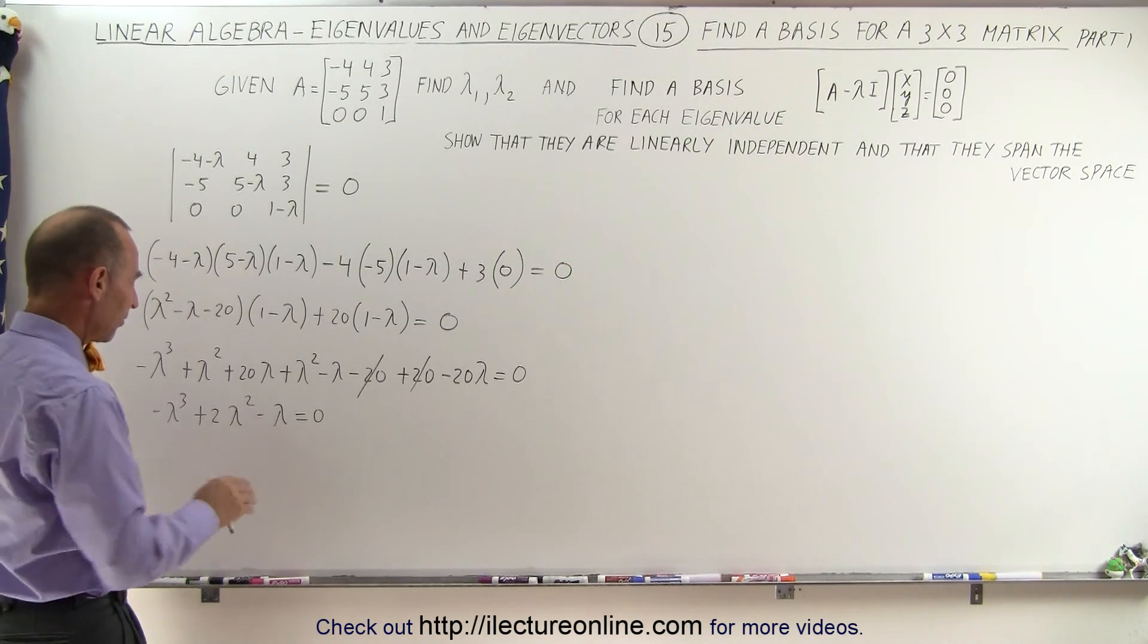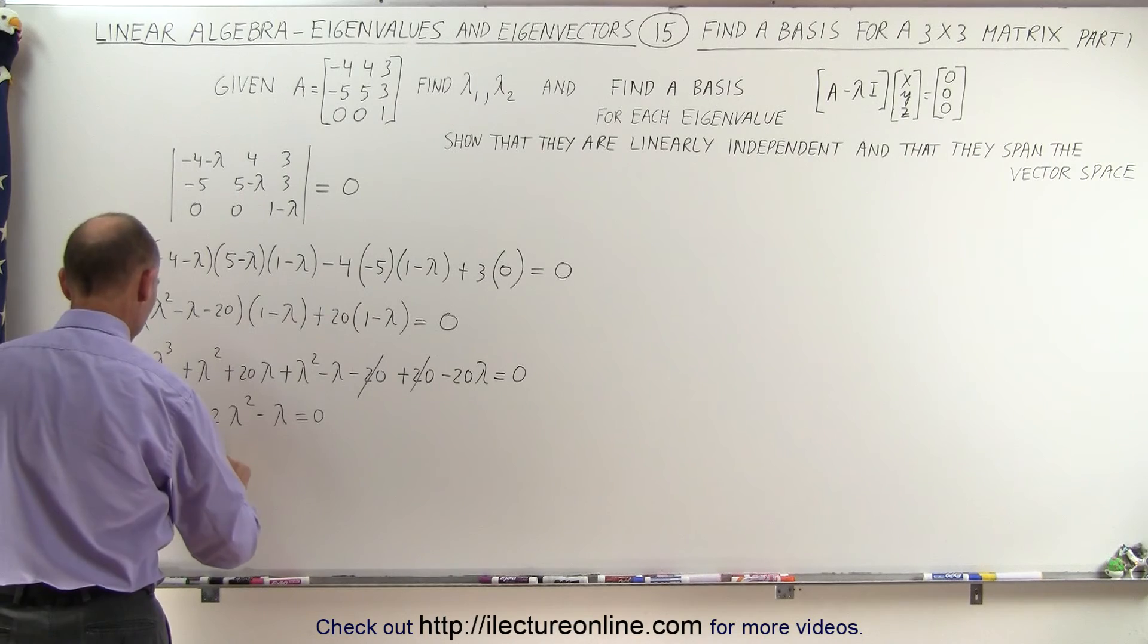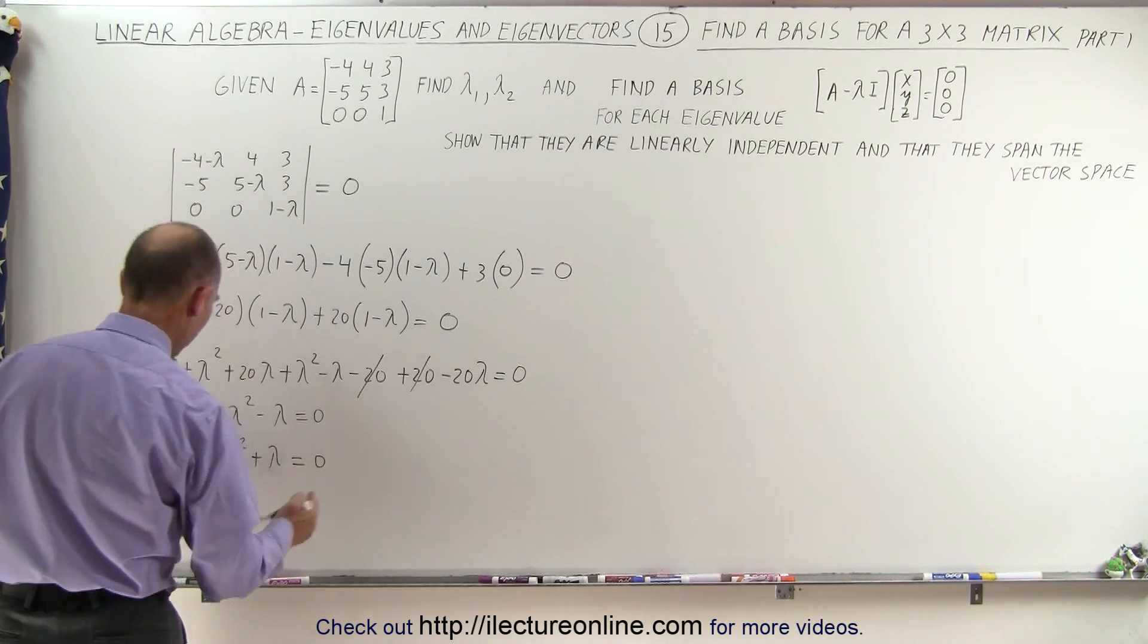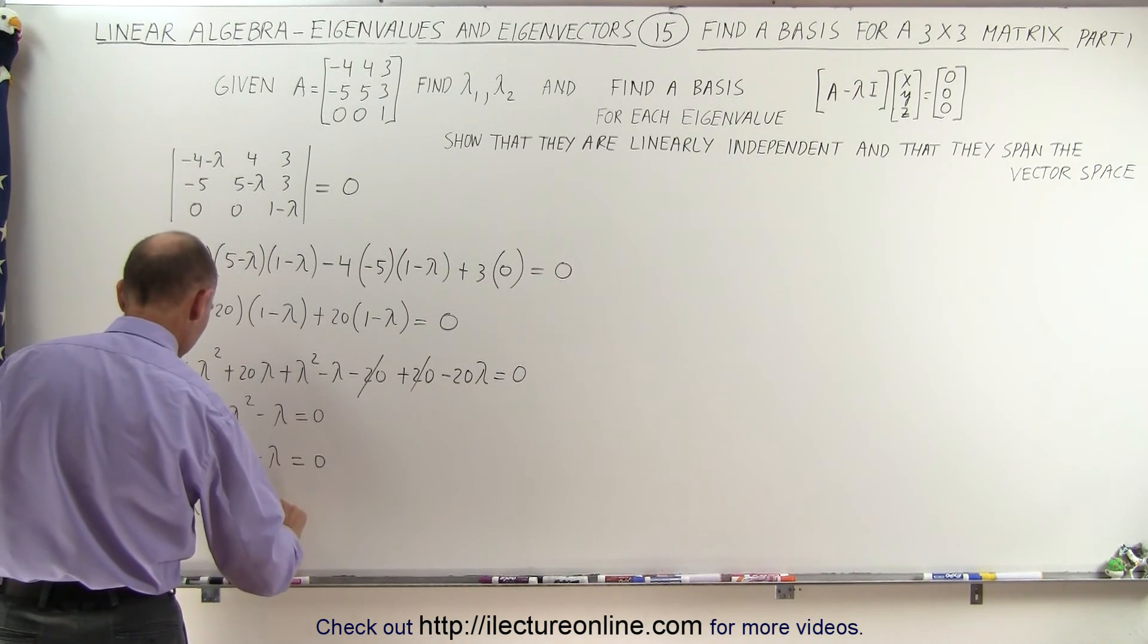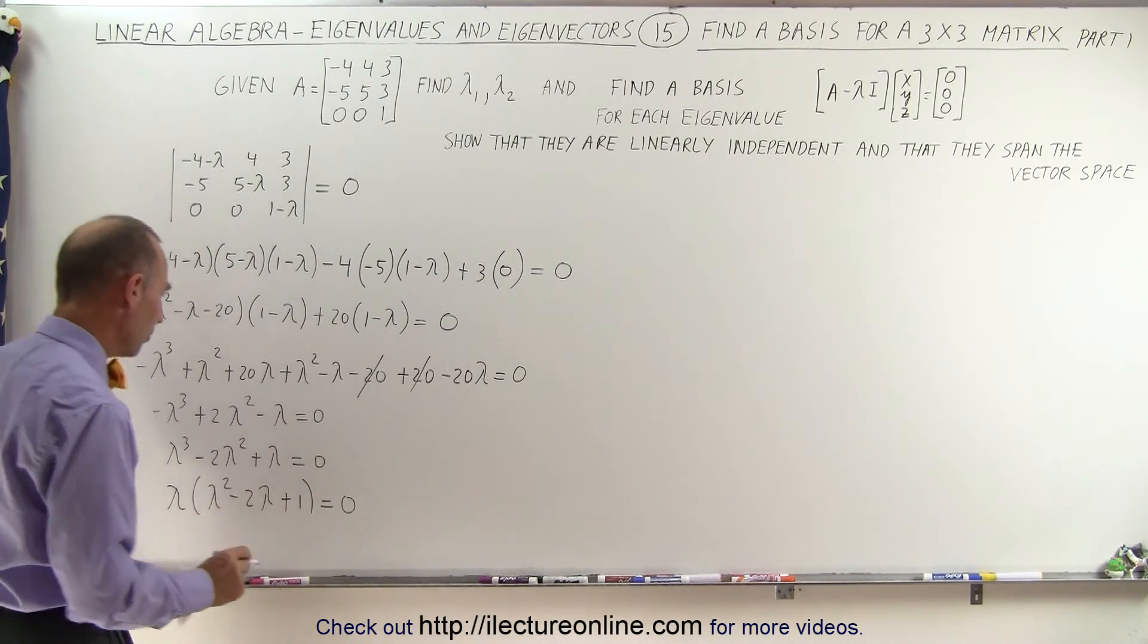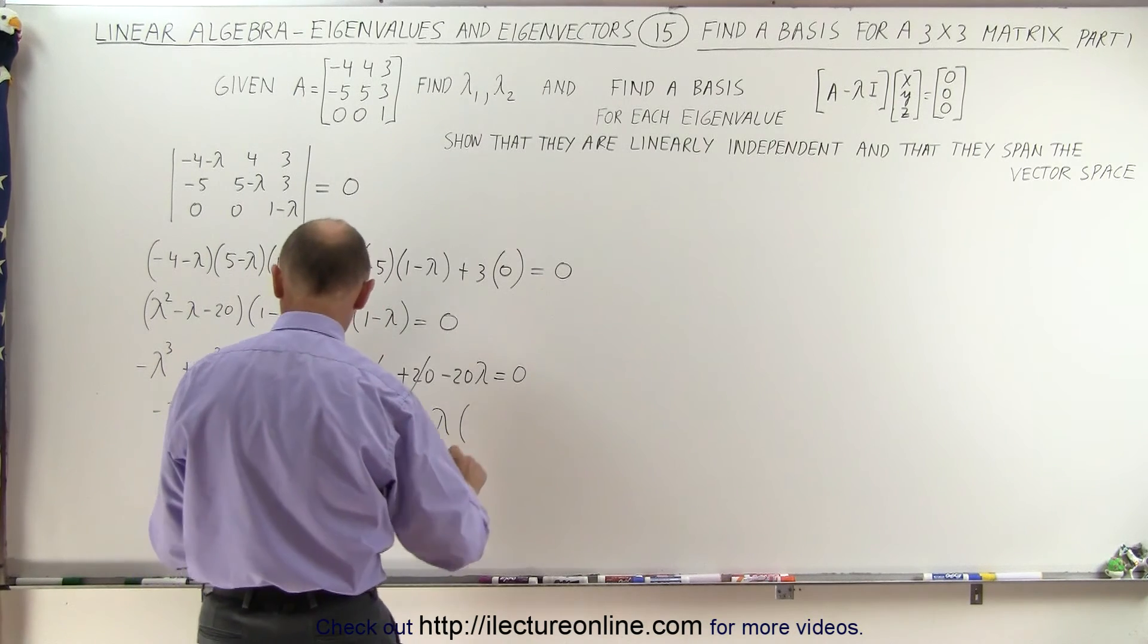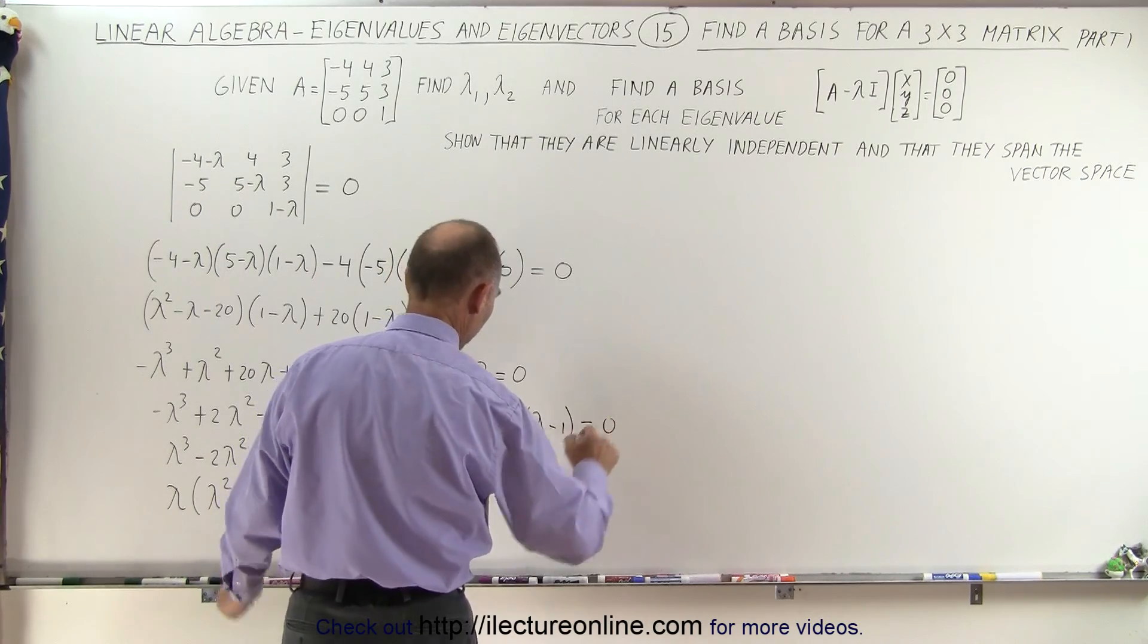I like the first term to be positive. I'm going to multiply everything by negative 1. So we get lambda cubed minus 2 lambda squared plus lambda equals 0. And when I factor out a lambda I'll get lambda squared minus 2 lambda plus 1. And I can factor this some more. I can then say that lambda times lambda minus 1 times lambda minus 1 equals 0.